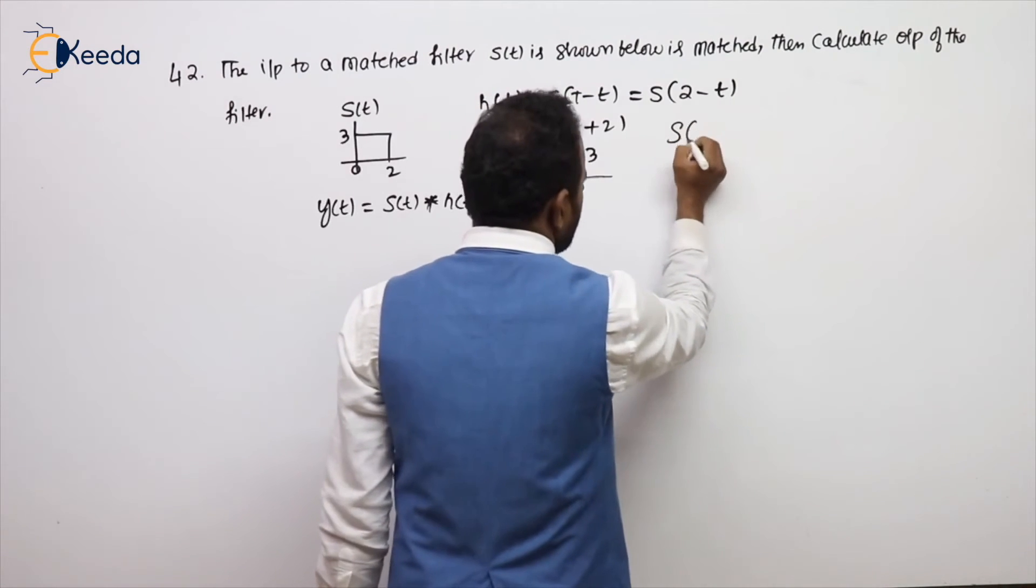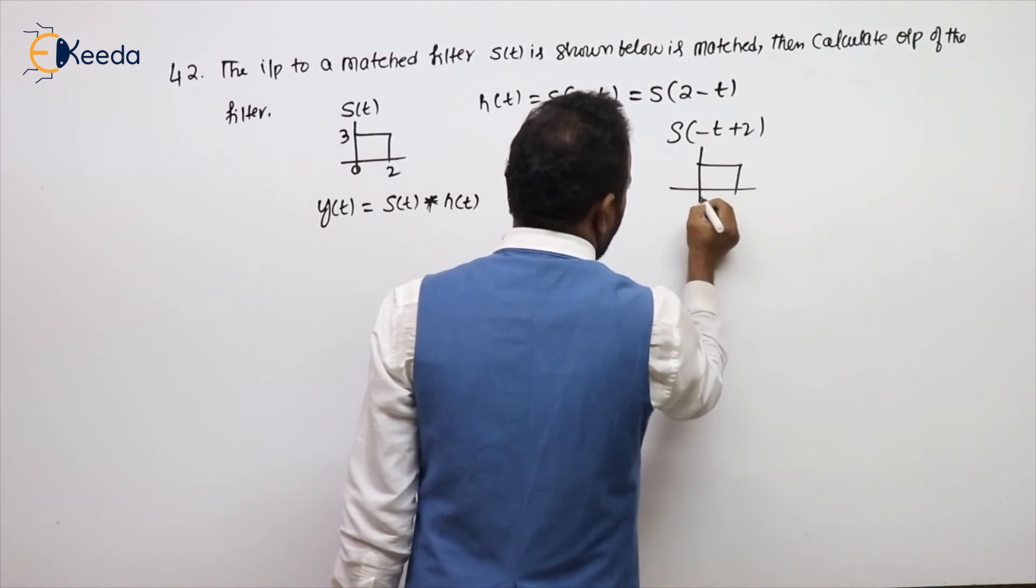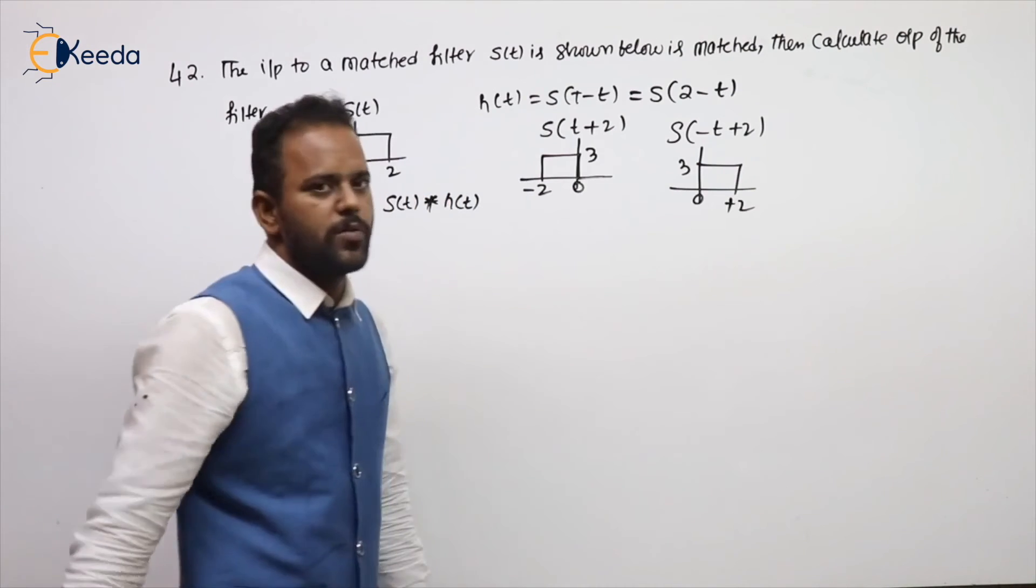Then, how to get S of minus T operations? Multiply all T values by negative sign, minus 2 will become plus 2.